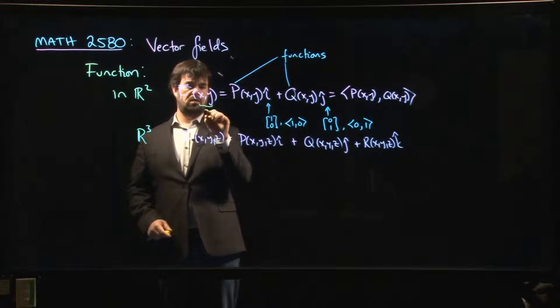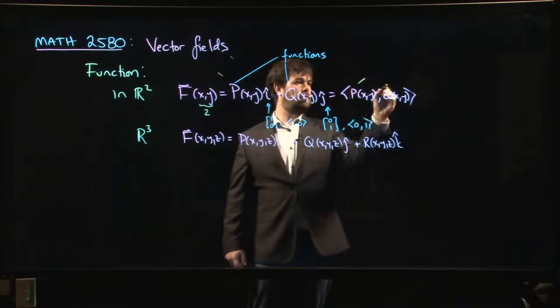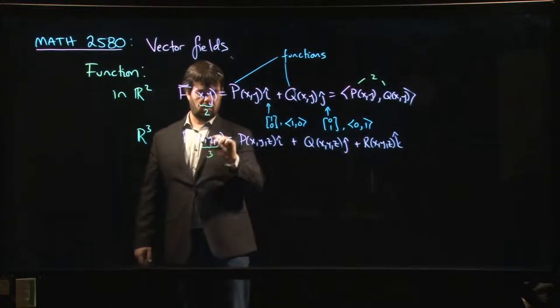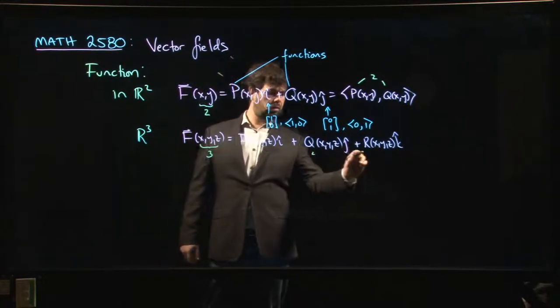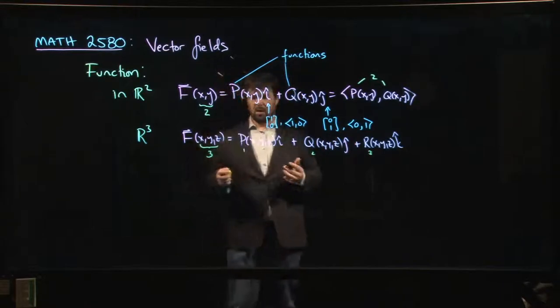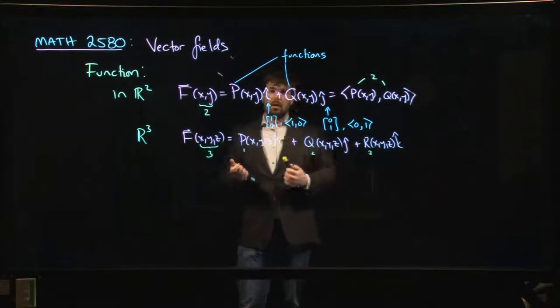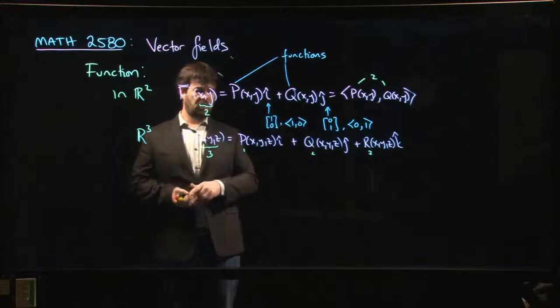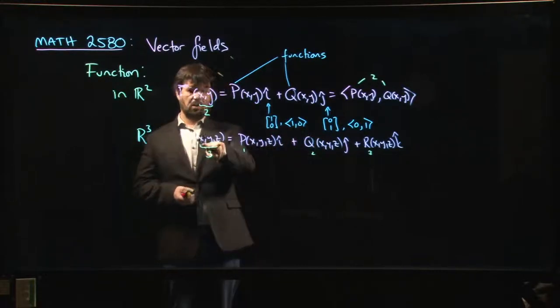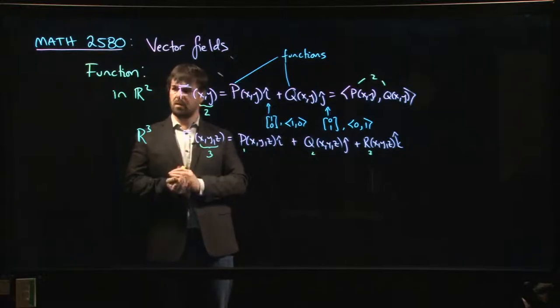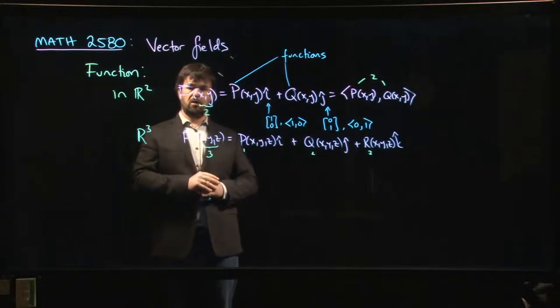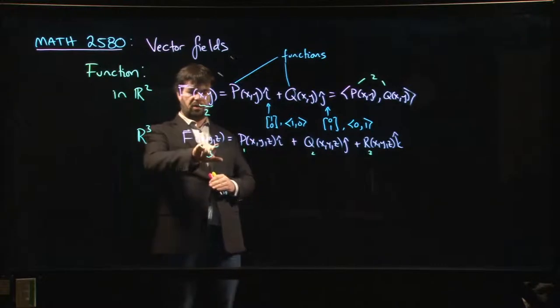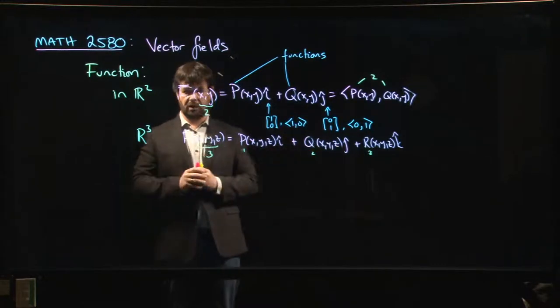The important thing to keep in mind is in R² you have two variables and two components. In R³, three variables and three components. The main requirement that distinguishes vector fields from other vector valued functions is that the number of components in your vector has to equal the number of variables.